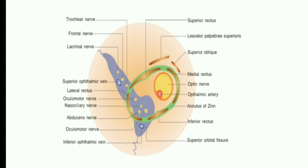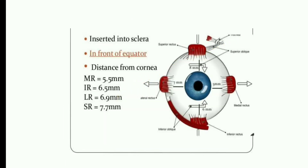The rectus muscles pass forward along the eyeball and insert into the sclera at different distances from the limbus. The medial rectus inserts at 5.5 mm from the cornea, the inferior rectus at 6.5 mm, the lateral rectus at 6.9 mm, and the superior rectus at 7.7 mm from the cornea.